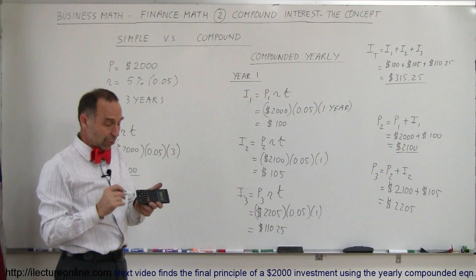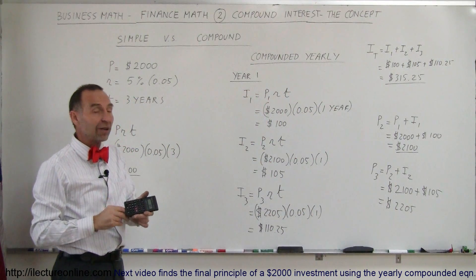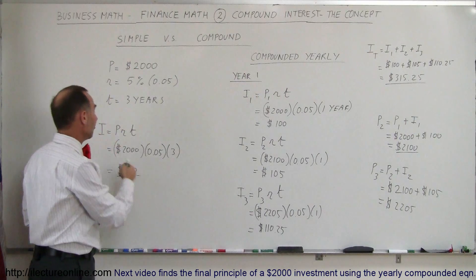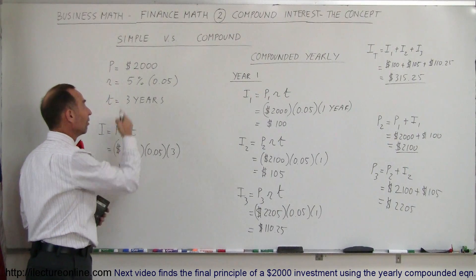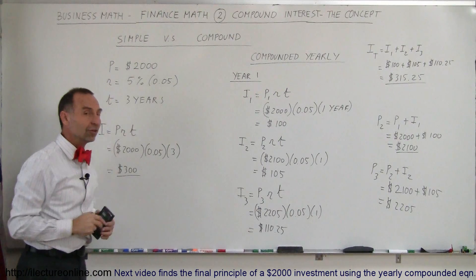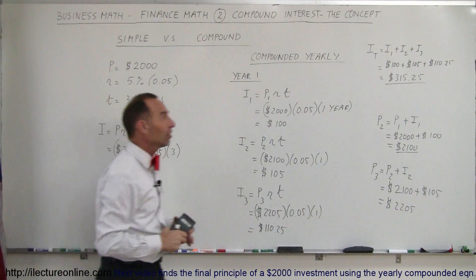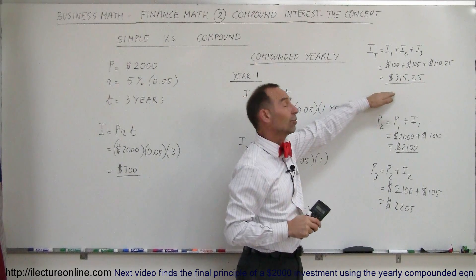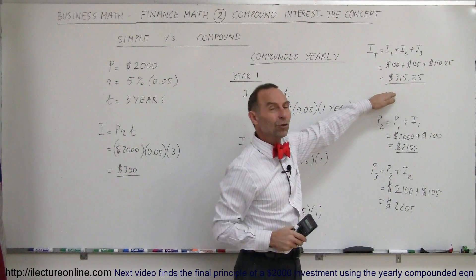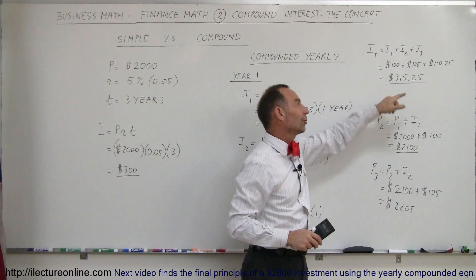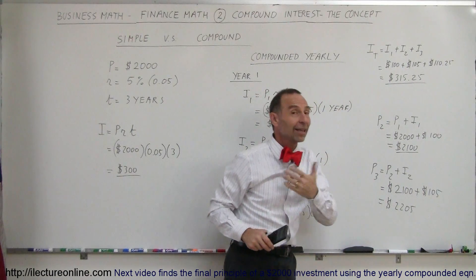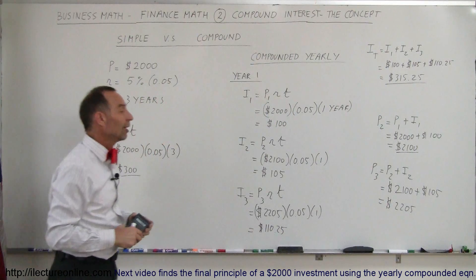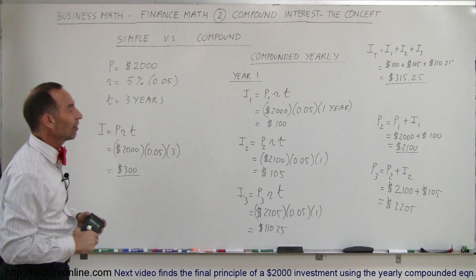So if there were two banks side by side — one advertising 5% for three years, another saying 'I'll give you 5% compounded yearly for three years' — which bank would you go to? You'd go to the second bank and get an additional $15.25.